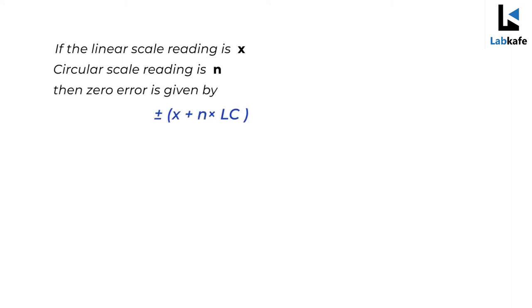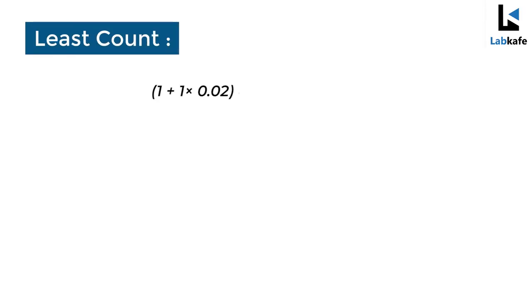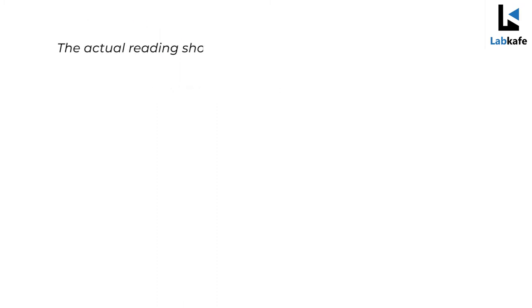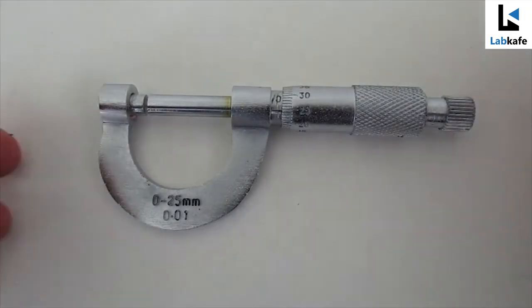In our case, the main scale reading is 1 and the circular scale reading is 1. Therefore the zero error is 1 + 1 × 0.02, which is 1.02 mm. Hence the actual reading should be the measured reading minus 1.02 mm.